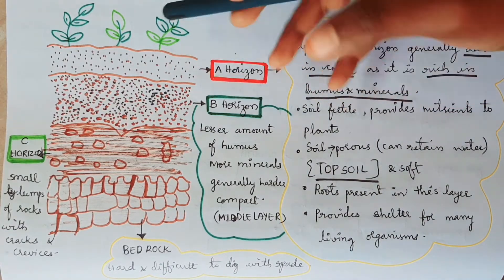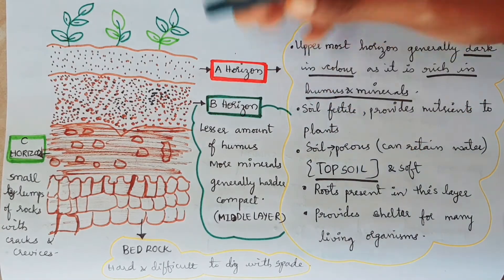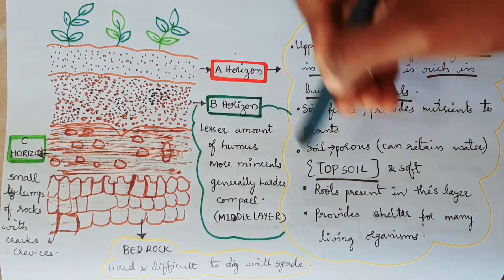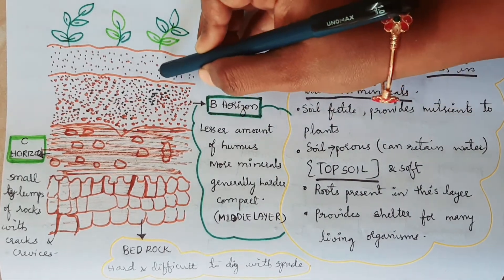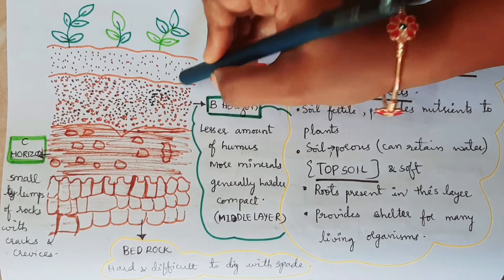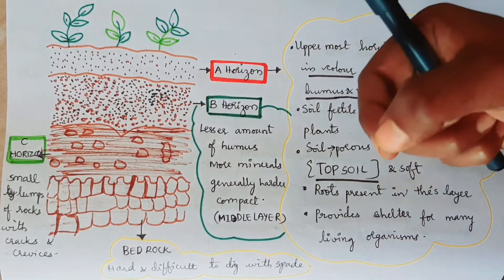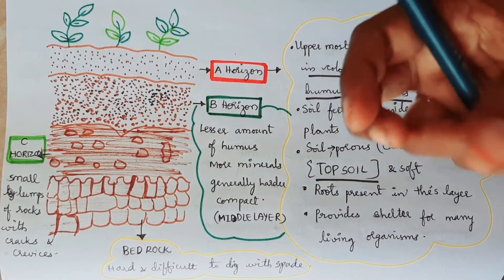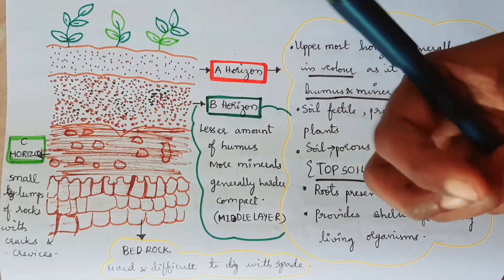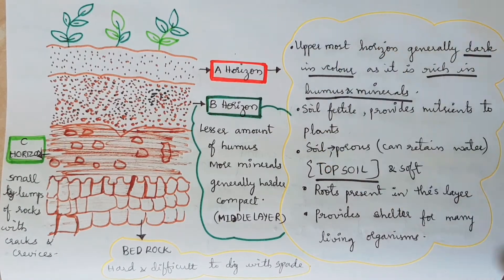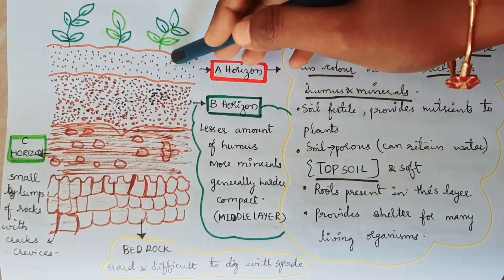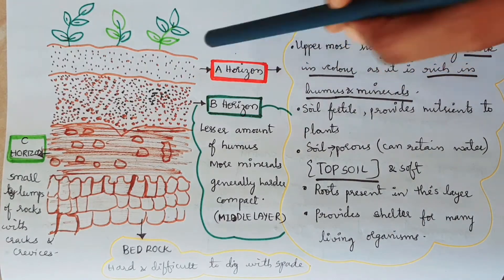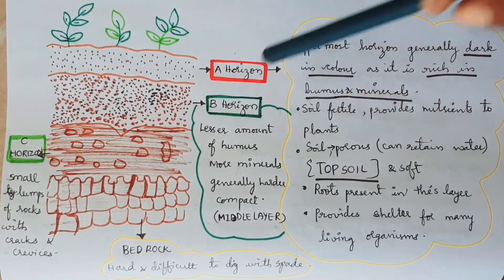The soil in A-horizon is soft and porous. Porous means the soil has particles with spaces between them. In these spaces, water can sink in and be held. The porous nature allows the soil to supply water and minerals to plants. So A-horizon is dark in color, rich in humus and minerals, has many organisms in the top layer, and the soil is soft and porous, absorbing water and supplying it to plants.